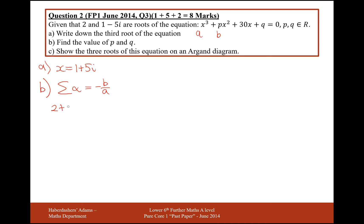So add all the roots together, I get 2 plus 1 minus 5i, add 1 plus 5i is going to equal minus p over 1. So that's going to give me 4 equals minus p, so p must be minus 4.